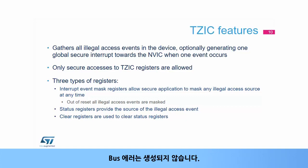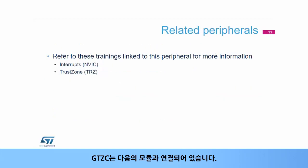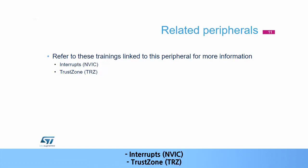The TZIC has relationships with the following modules: the Nested Vectored Interrupt Controller or NVIC, and TrustZone.